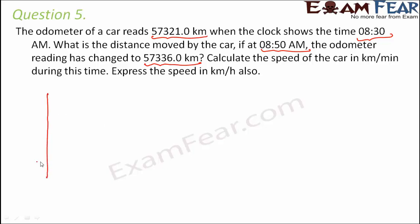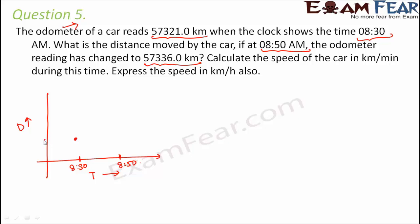For question five, let's use the distance-time graph, with time on the x-axis and distance on the y-axis. We noted the car's odometer reading - which tells the total distance traveled so far - at 8:30 AM and at 8:50 AM. At 8:30 AM the odometer reading was 57,321, and at 8:50 AM it had increased to 57,336. We have to calculate the distance moved by the car between these two times.